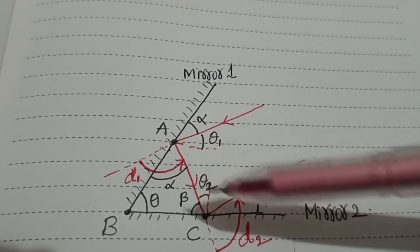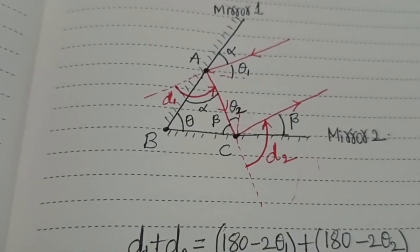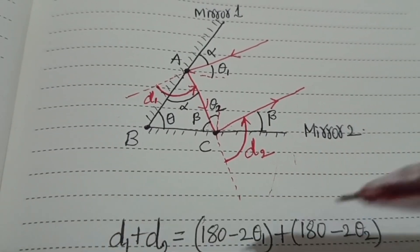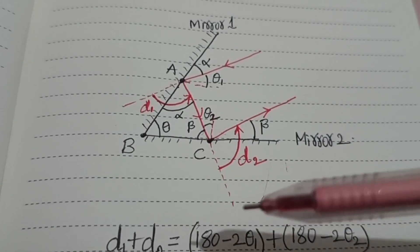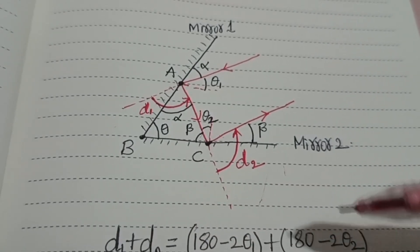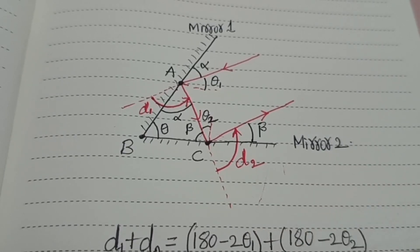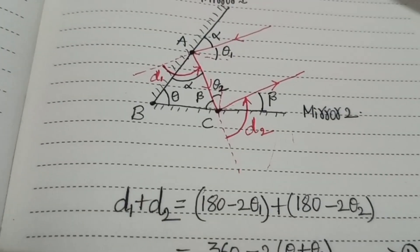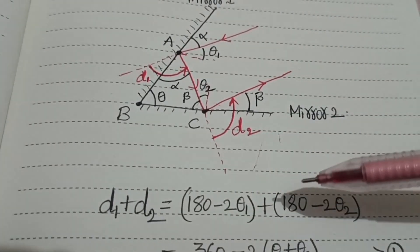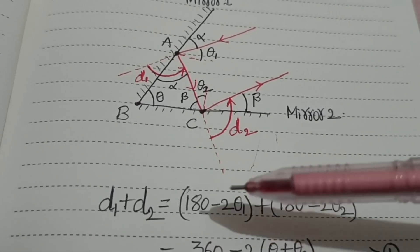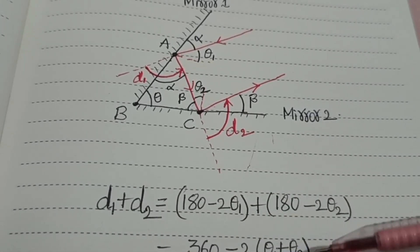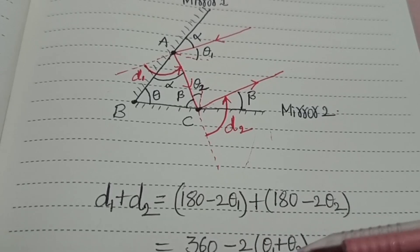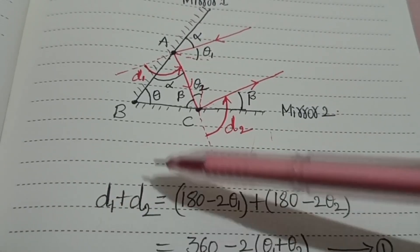If we add the total deviation, d1 + d2, we get (180 - 2θ1) + (180 - 2θ2). As a next step, 180 + 180 gives 360, and taking -2 common gives us 360 - 2(θ1 + θ2). So if we find the sum θ1 + θ2, we can find d1 + d2, which is the total deviation.